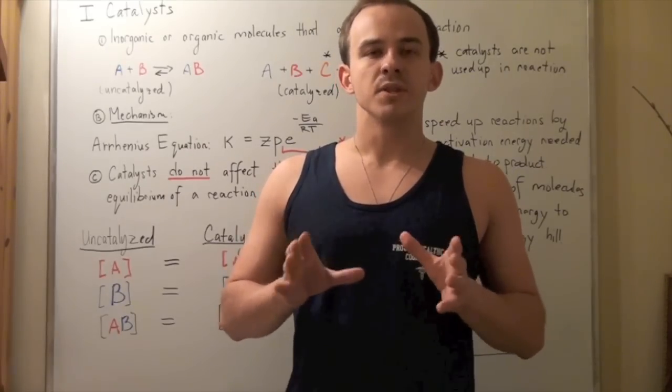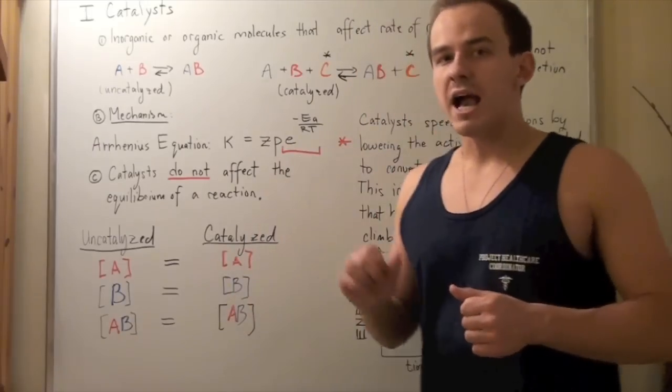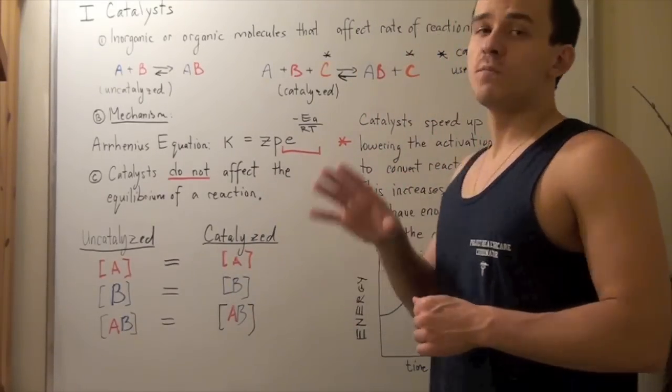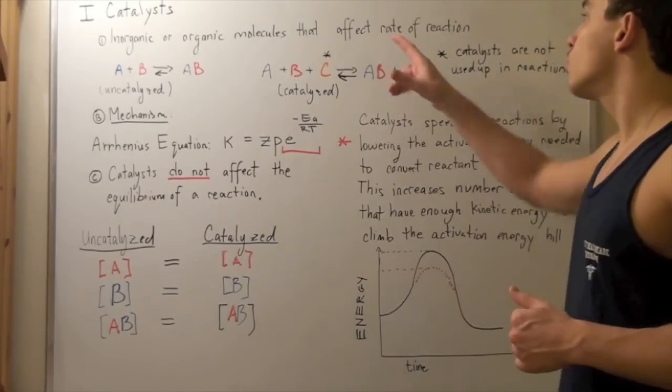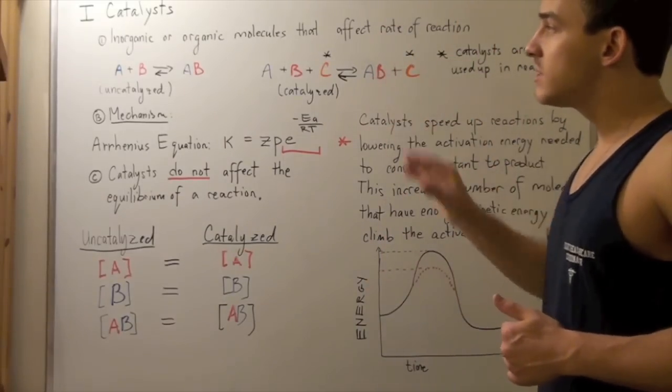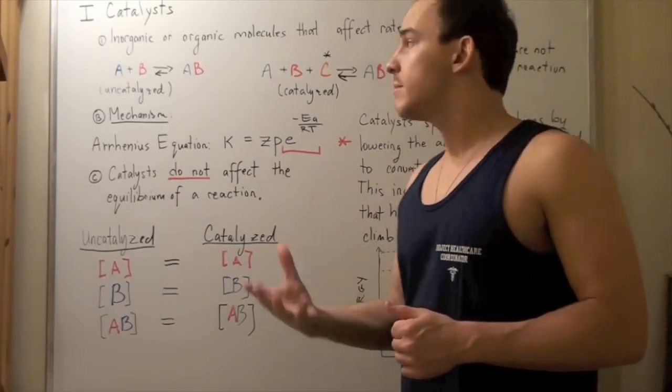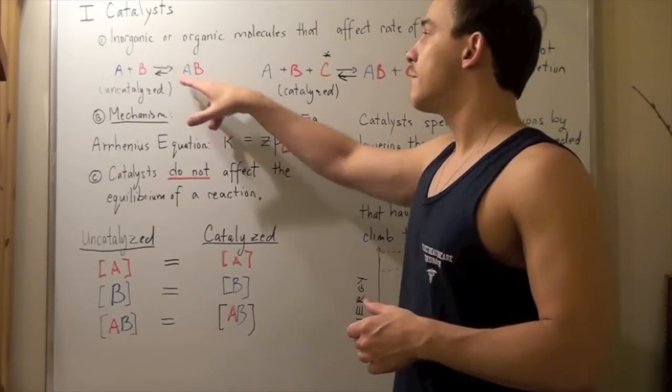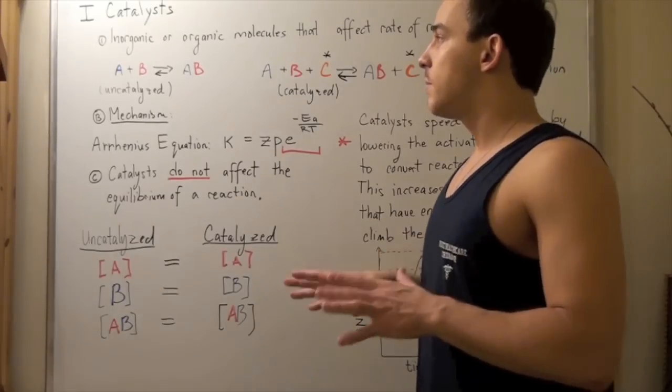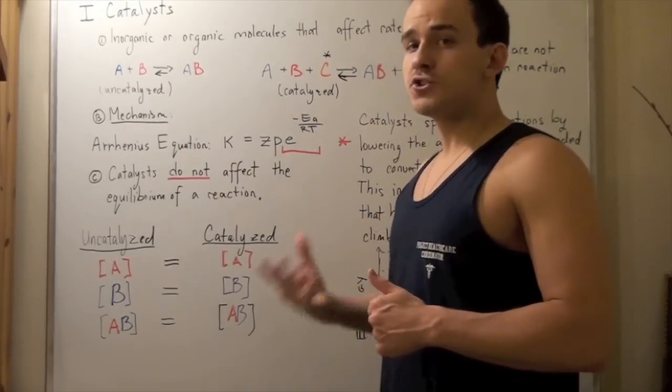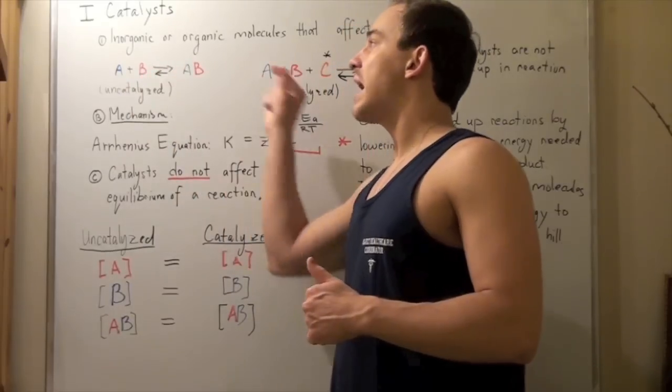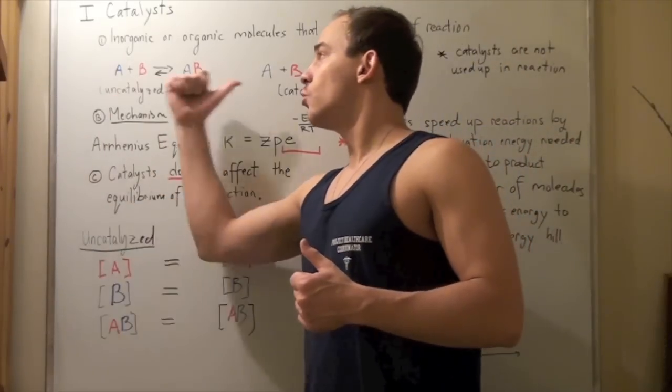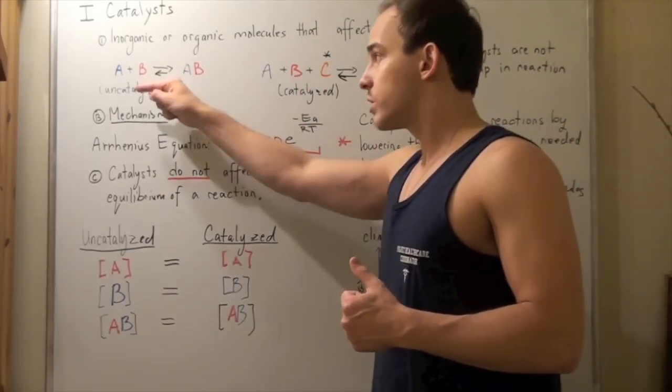Today we're going to look at catalysts. Catalysts are organic or inorganic molecules that, like temperature, affect our rate of reaction. Let's look at the following hypothetical example, in which reactants A plus B react to form a product AB. Suppose that our reaction is reversible, meaning it goes forward and backward. That means at equilibrium, our rate forward will be the same as the rate backwards.